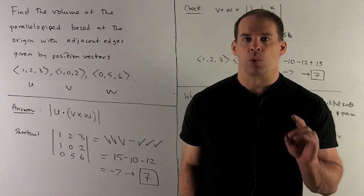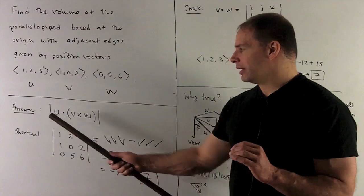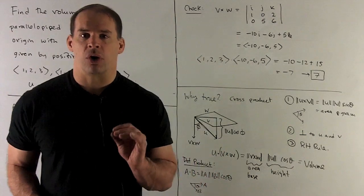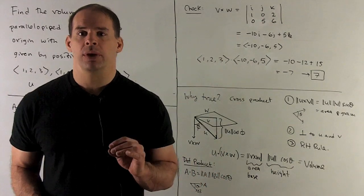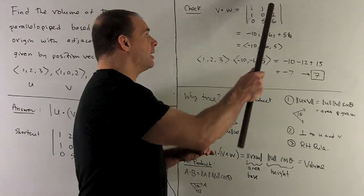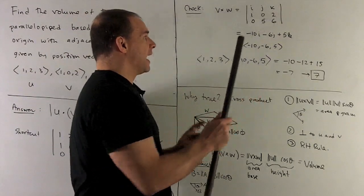Now, let's work it out the slightly longer way just off of this definition. So what do we do? First, we're going to take the cross product of (1, 0, 2) and (0, 5, 6). So we put in I, J, K, put our vectors in. And now what do we do?